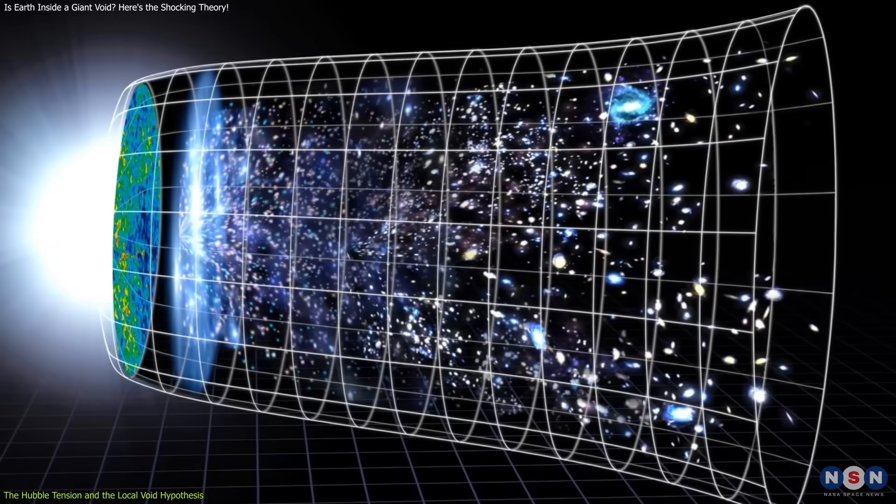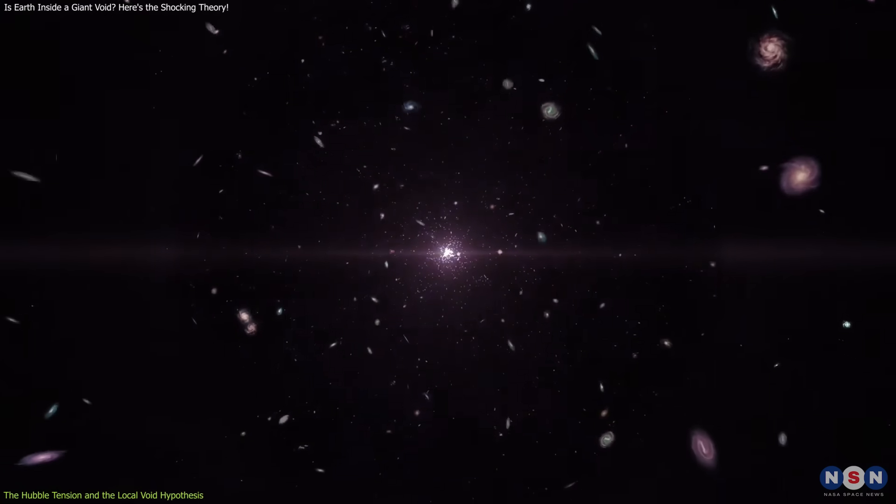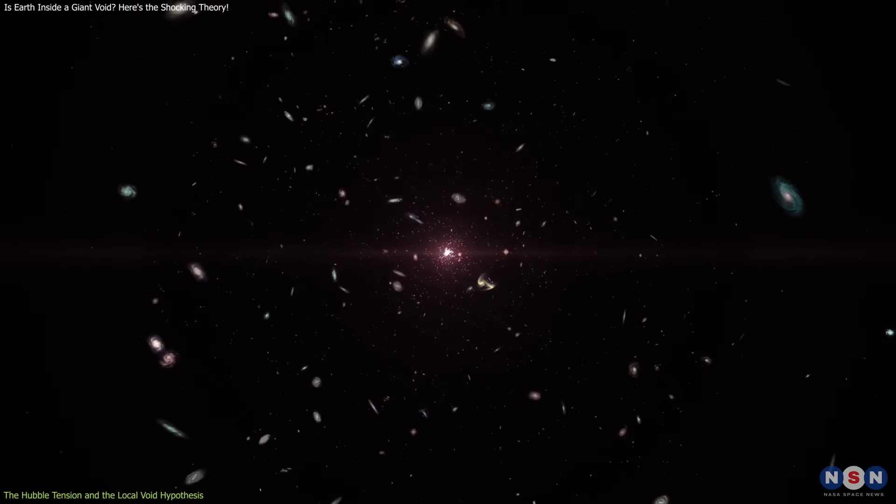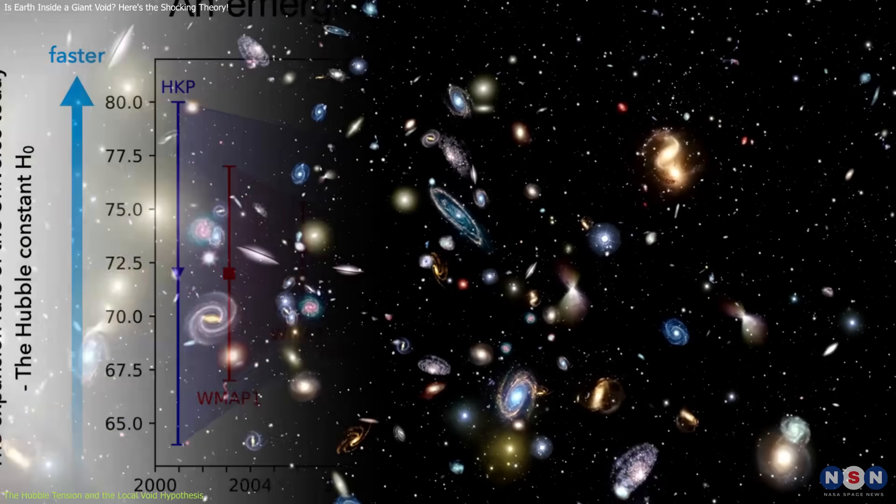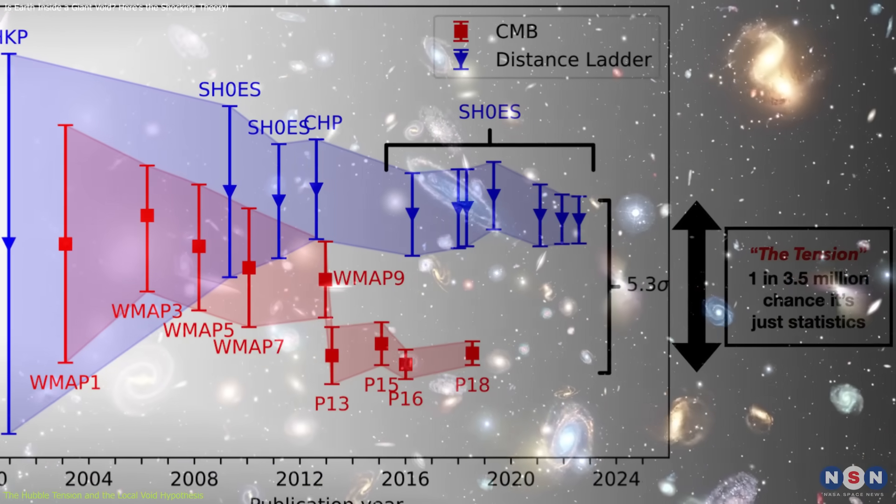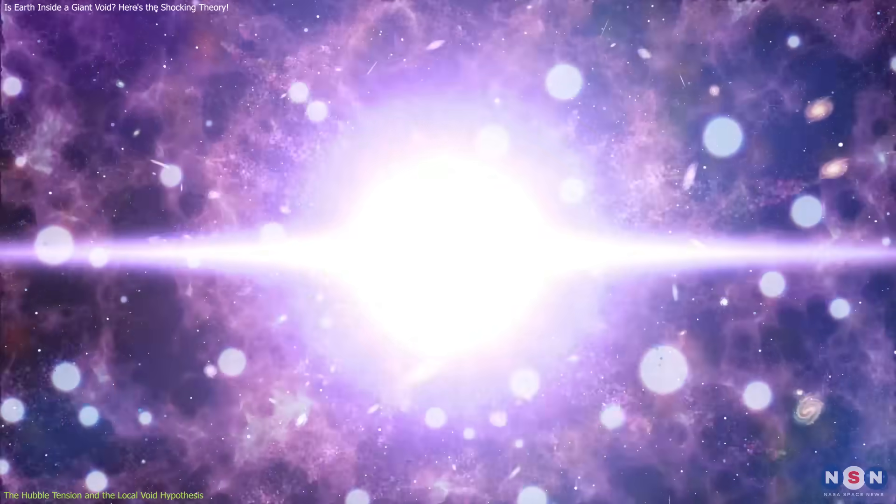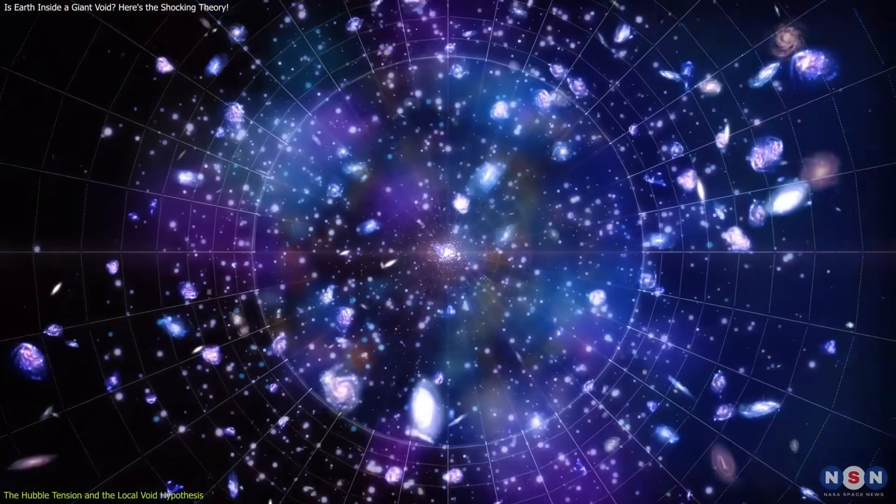The standard model of cosmology, known as Lambda CDM, assumes a uniform distribution of matter across the universe. However, this model doesn't fully explain the differences in the measured expansion rates between the early universe and the local universe. The Hubble tension, in part, highlights the need for a more nuanced understanding of cosmic structure and expansion.